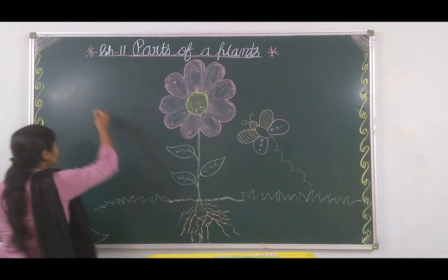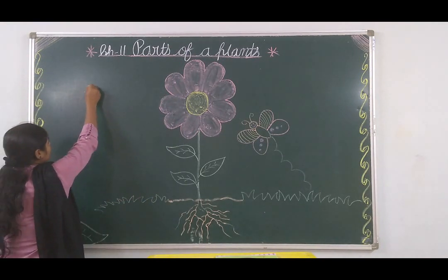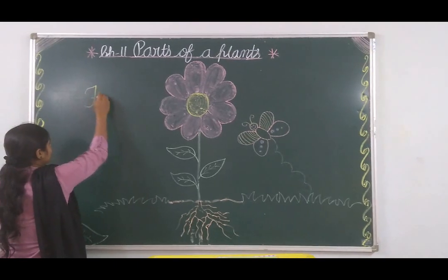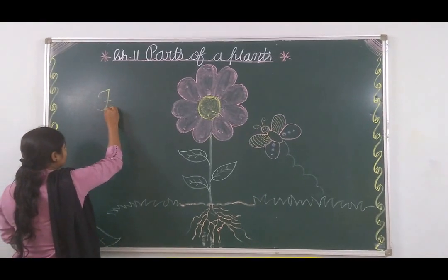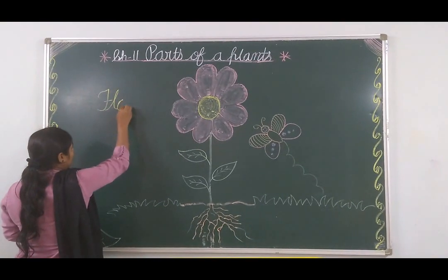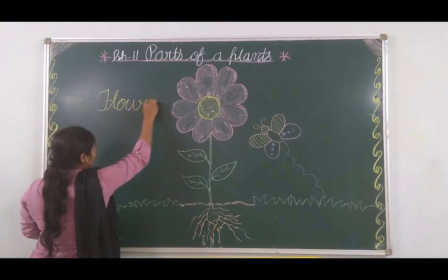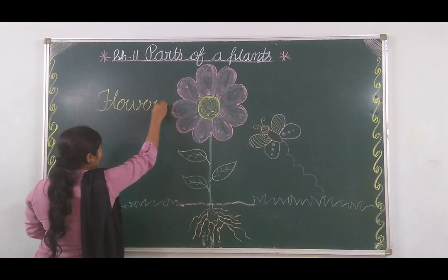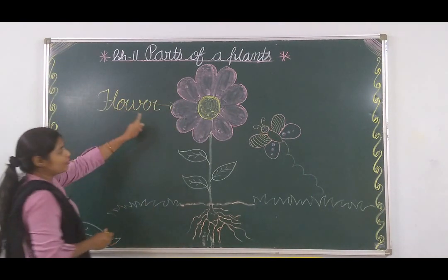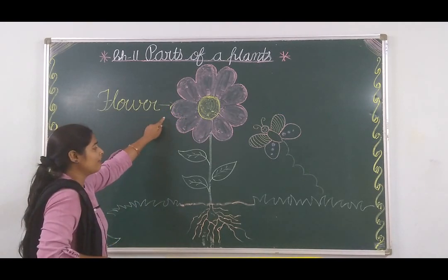Here I will write the spelling of flower: F, L, O, W, E, R. Flower. What do we call this? Flower.